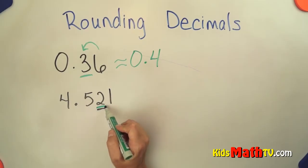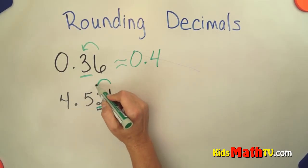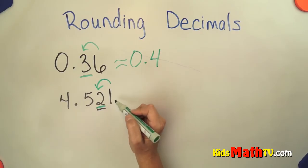So the 2 is in the hundredths place. This 1 tells this 2 what to do. Is it going to stay the same or go up to 3 hundredths?